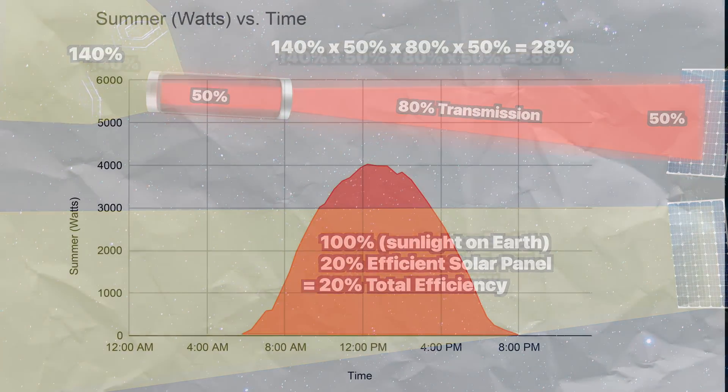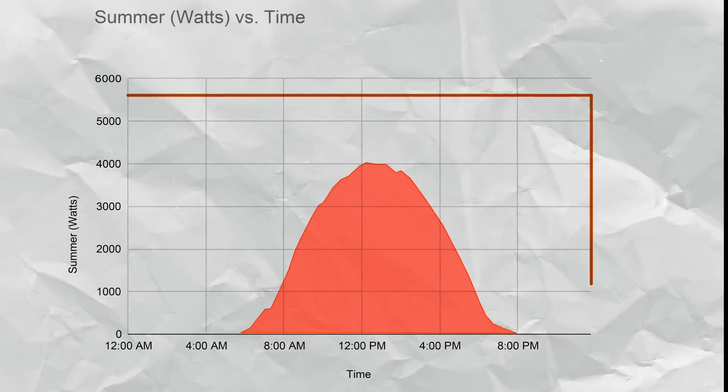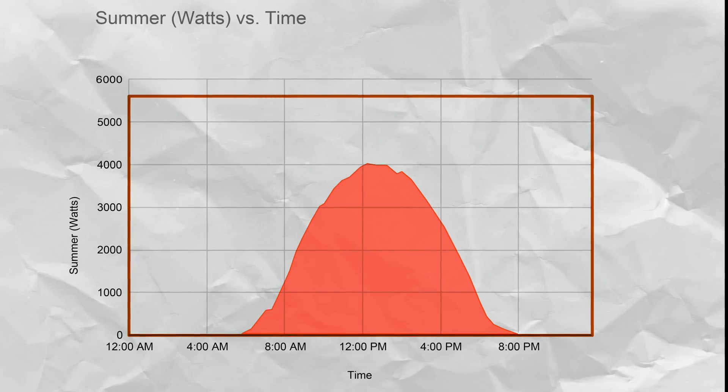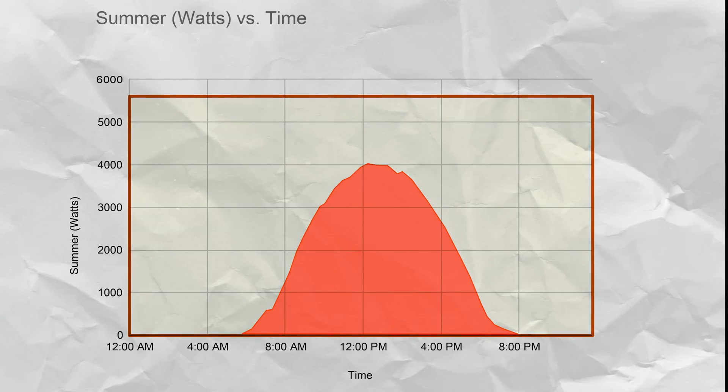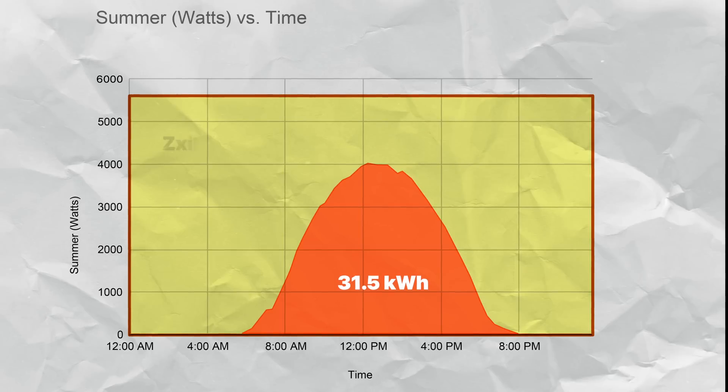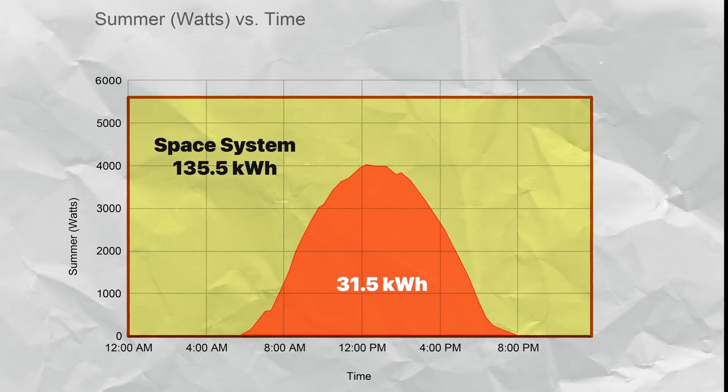So going back to our 5 kilowatt system, 140% of the peak of 4,000 watts we see on Earth is now 5,600 watts in space. Plus it's continuous over the entire day. If we add up the area under the curve, we see our land system produces 31.5 kilowatt hours per day and our space system produces 135.5 kilowatt hours per day. But our space system is constant.